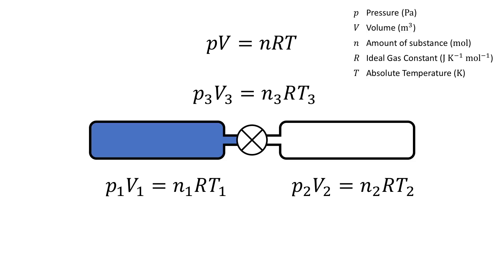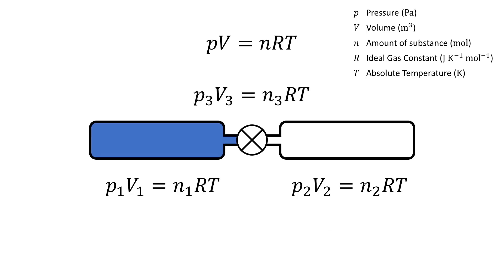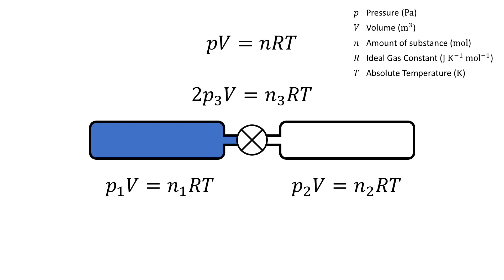We will take all measurements after allowing everything to reach thermal equilibrium, so T1, T2, and T3 are all equal to just T. And we will say that V1 and V2 are equal volumes because they were identical tubes, so V3 is equal to 2 times V. It then follows that N3 is equal to the sum of N1 and N2.